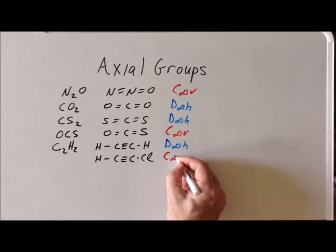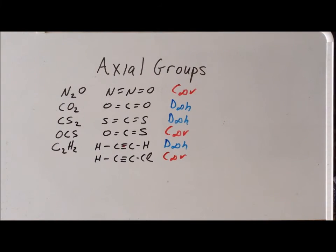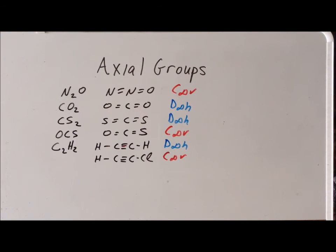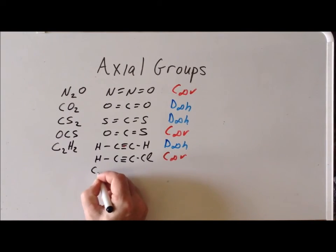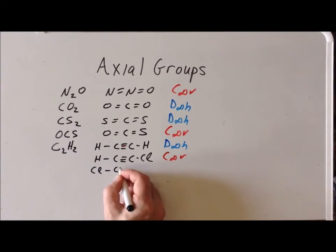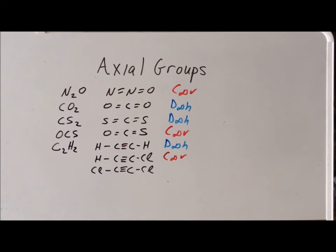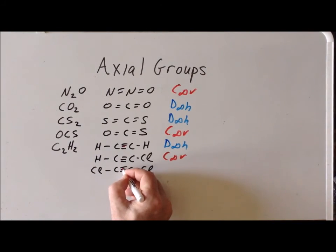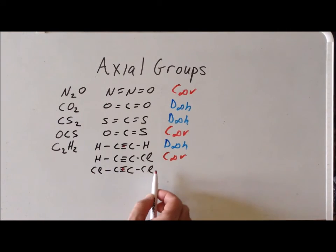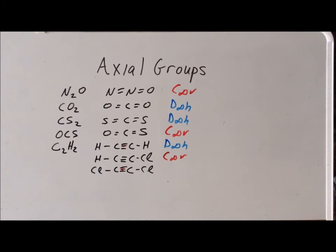If we continue and replace the second hydrogen with a chlorine atom as well, giving us dichloroacetylene, the general structure in the center doesn't change. Now a mirror plane will reflect chlorine into chlorine and carbon into carbon. So we have returned to the point group symmetry D∞h.